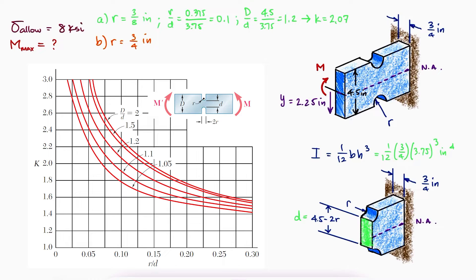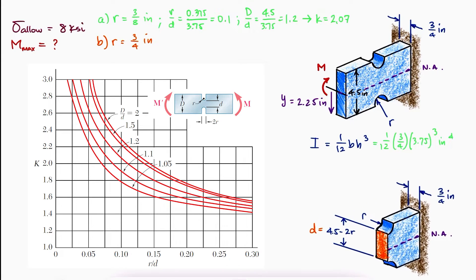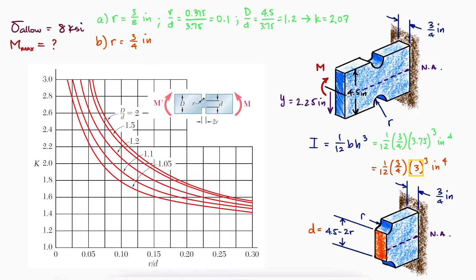Repeating these processes for question B, we would have a cross section area with a height of 3 inches and therefore an R over D ratio of 0.25, a D over D ratio of 1.5.